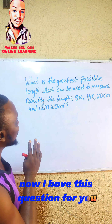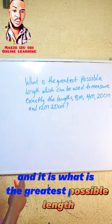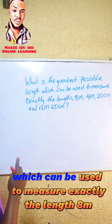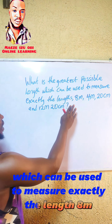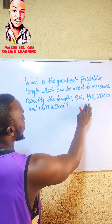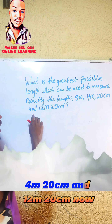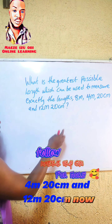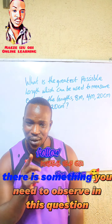What is the greatest possible length which can be used to measure exactly the lengths 8 meter, 4 meter 20 centimeter, and 12 meter 20 centimeter?